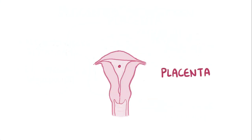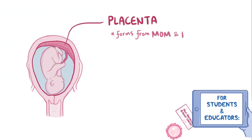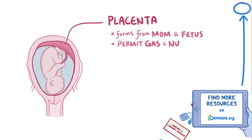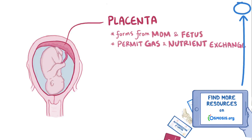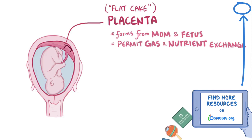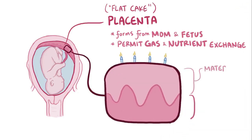The placenta forms where the embryo attaches to the uterine wall, and it's a unique organ because it develops from both the mom and the fetus, and its job is to permit gas and nutrient exchange between them. The word placenta literally means flat cake, so picture it as a cake with two layers: the maternal layer and the fetal layer.